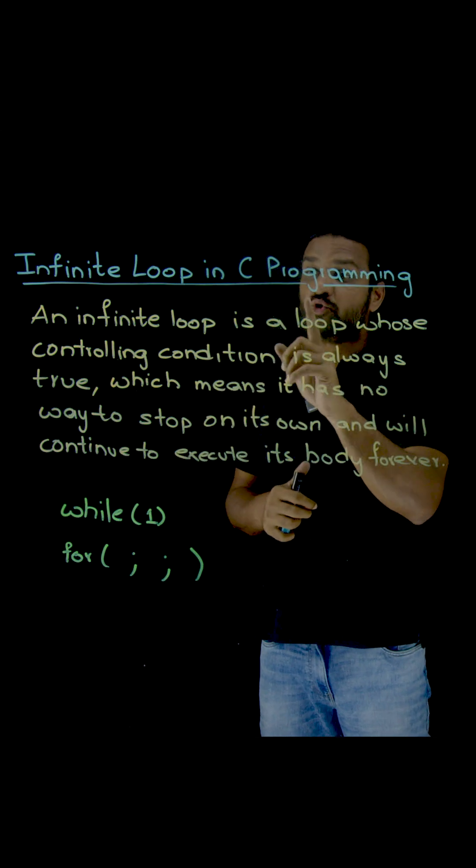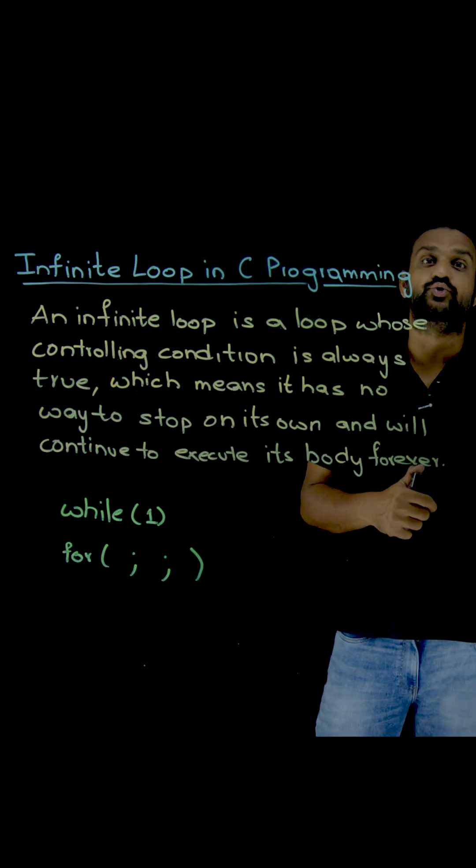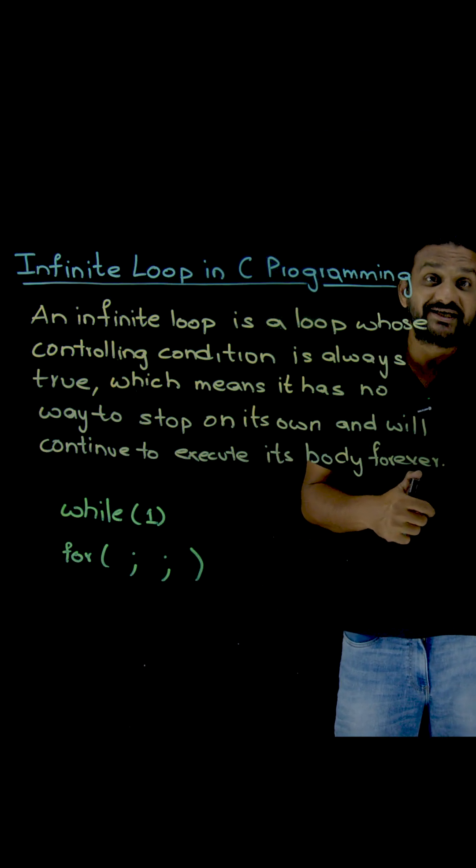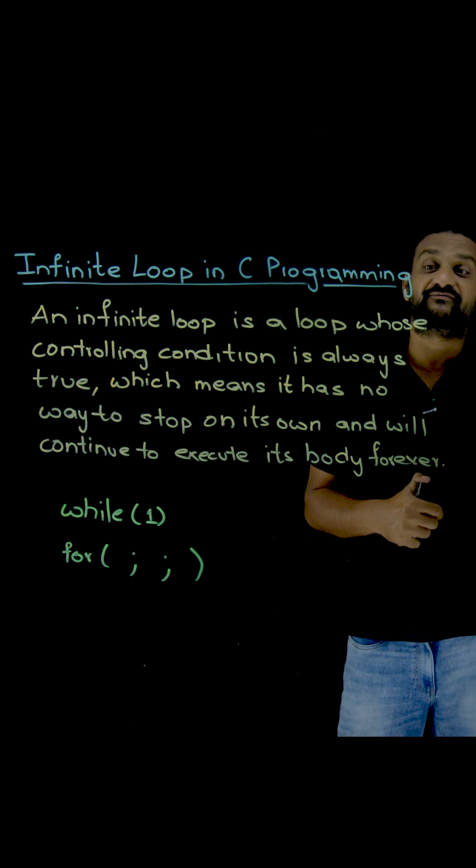An infinite loop is a loop whose controlling condition is always true. If the conditional statement of the loop is always true, then that loop is going to become an infinite loop.